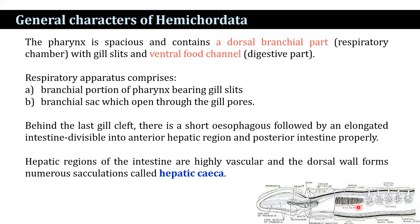The respiratory apparatus comprises the branchial portion of the pharynx bearing gill slits and the branchial sac, which opens through the gill pores. Behind the last gill cleft there is a short esophagus followed by an elongated intestine. The intestine is divided into an anterior hepatic region and a posterior intestine; the hepatic regions are highly vascular and the dorsal wall forms numerous sacculations known as hepatic caeca.